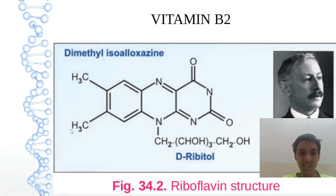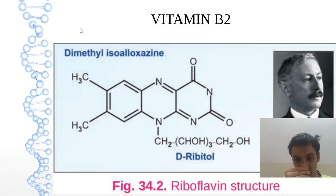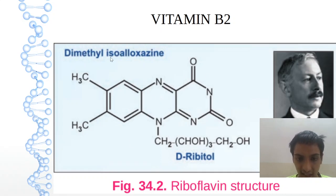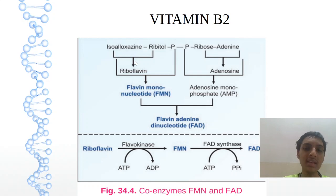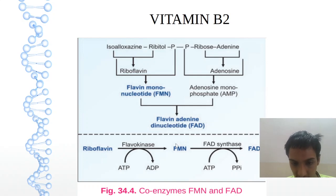Looking at the structure, we have a 6,7-dimethyl isoalloxazine ring with a 5-carbon ribitol sugar. Here is the ribitol sugar and the 6,7-dimethyl isoalloxazine ring. The function of this vitamin is in the form of coenzymes only — FMN and FAD. From riboflavin, on phosphorylation, we get FMN and FAD.